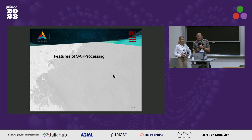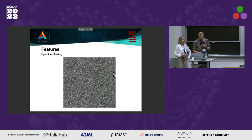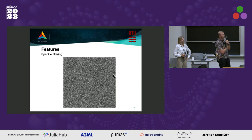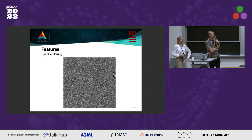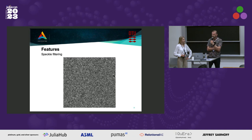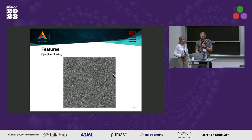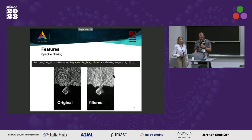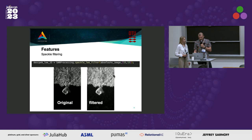Now on to some of the features. This right here may look like a noisy image, but it is in fact a really homogeneous image. This is due to a noise-like phenomenon called speckle. You want to create some sort of speckle filter that makes the image more interpretable. This is called speckle filtering, and we have implemented a few of those. This is the so-called Lee speckle filter, where you can play with some of the parameters in order to filter the image as you want.